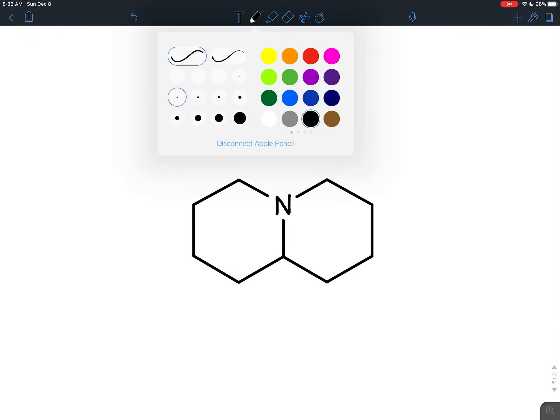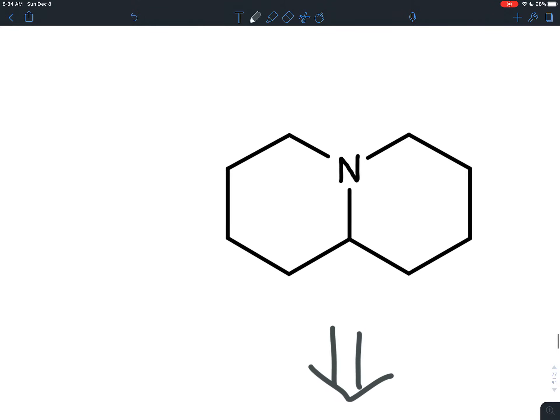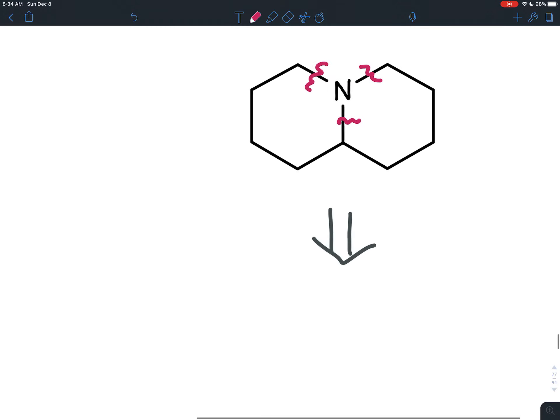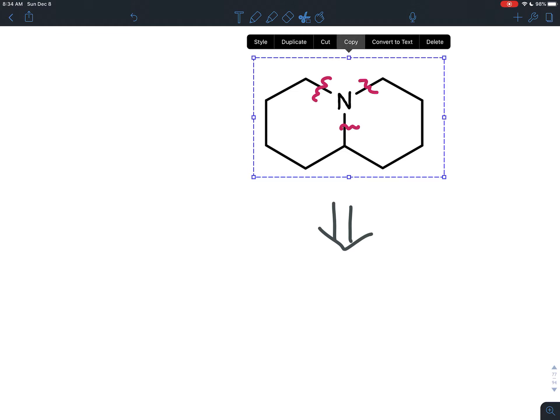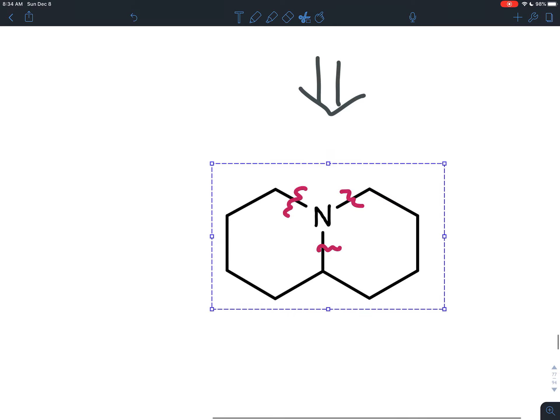So if we were doing reductive amination, the first step would be to break all the bonds between the nitrogen and the carbon. If we're thinking backwards and we're thinking, okay, I want to make this, what do I need? To figure that out, you break each of the bonds between the nitrogen and the carbons. And then where those bonds were, where the nitrogen was bonded, you add in a carbonyl.